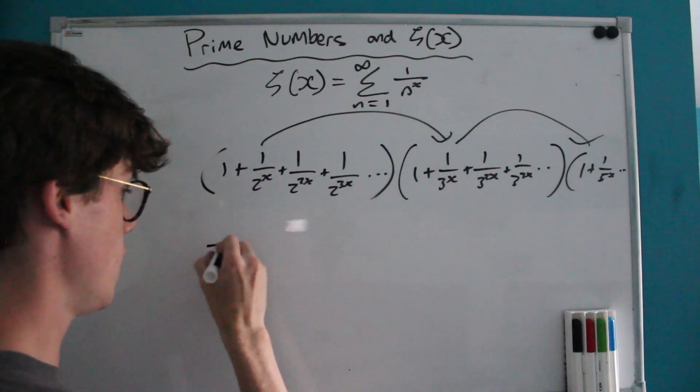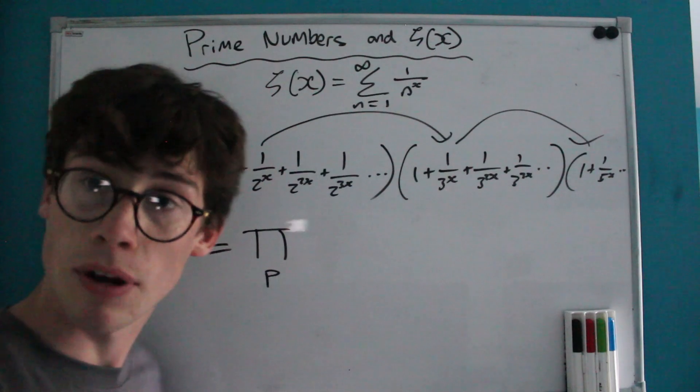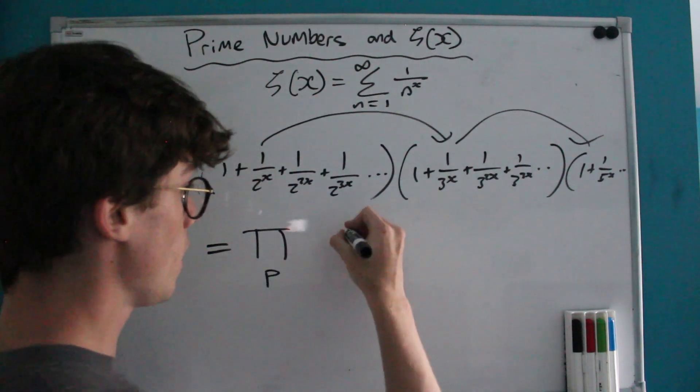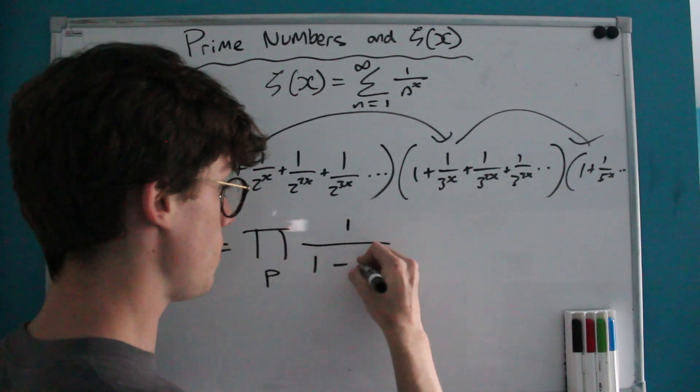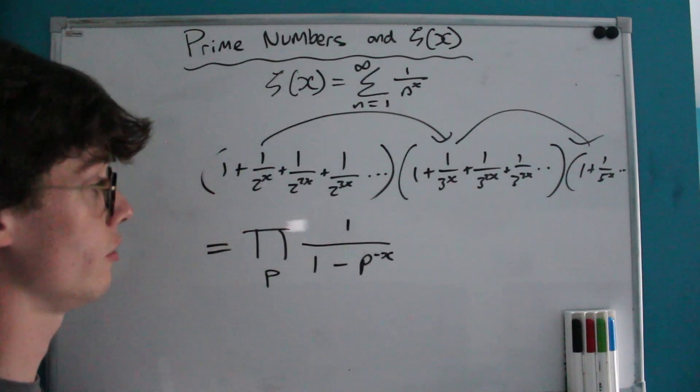And the way that this is denoted is as follows, it's the product over the primes represented with a p of 1 over 1 minus p to the negative x or 1 over p to the x in other words.